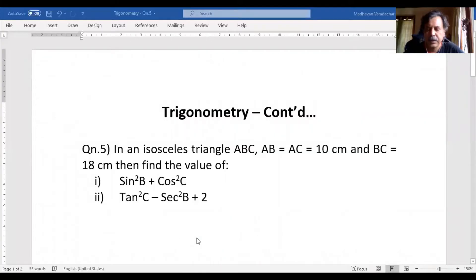Hello everyone, let's move on to the next question in trigonometry. The question says in an isosceles triangle ABC, AB is equal to AC and that is equal to 10 cm, BC is equal to 18 cm, and then to find the values of certain expressions. First one is sine square B plus cos square C, and second one is tan square C minus secant square B plus 2.